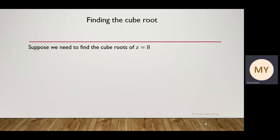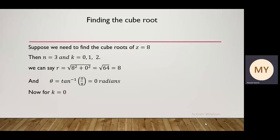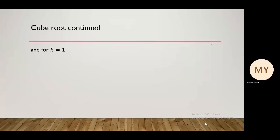Finding the cube roots: suppose we need to find the cube roots of z equals 8. We identify n equals 3 and k equals 0, 1, or 2. Now r equals root of 8 squared plus 0 squared, which equals root of 64, equals 8. Theta equals tan inverse of 0 upon 8, which is 0 radians. For the first root k equals 0, so z1 equals cube root of 8, argument (theta plus 0) divided by 3, giving the first root as 2.